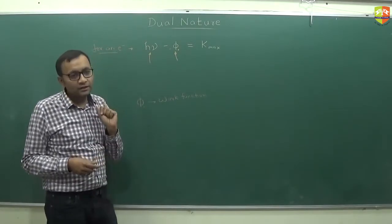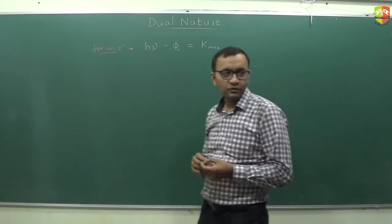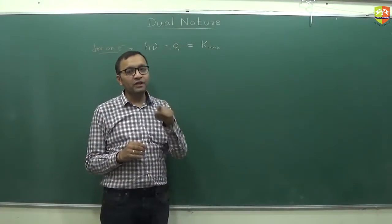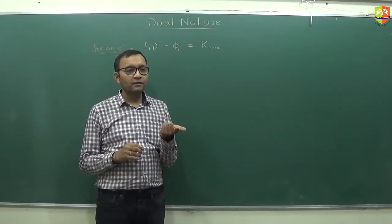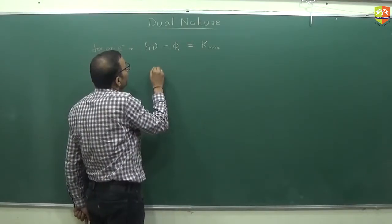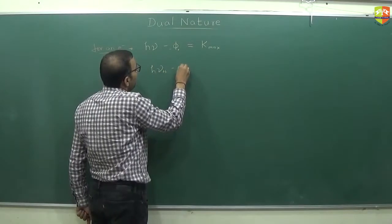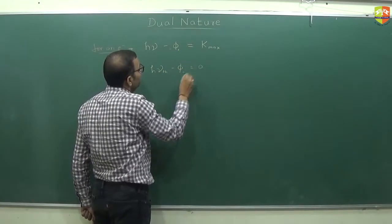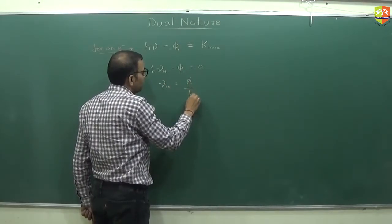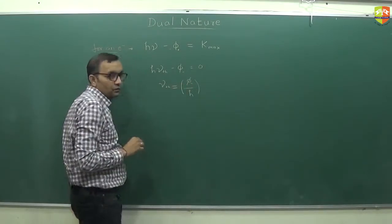So can you find out how much is the threshold frequency using this equation? Threshold frequency is when electron is just able to come out or kinetic energy is minimum or zero. So put k zero here, you will get h times mu threshold minus phi naught is equal to zero. So mu threshold is phi naught by h.